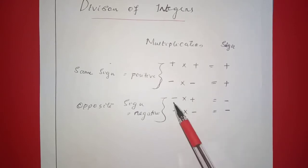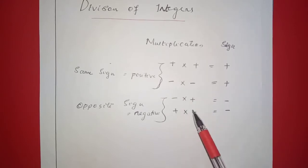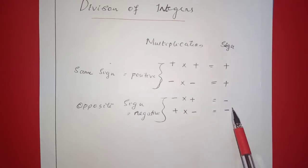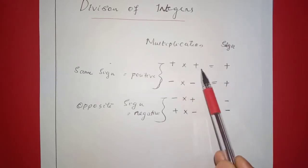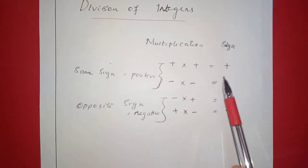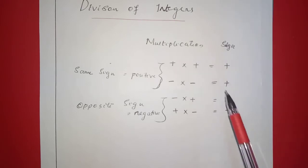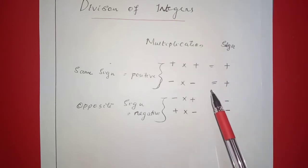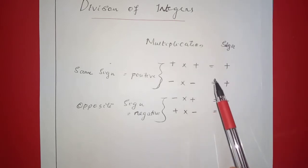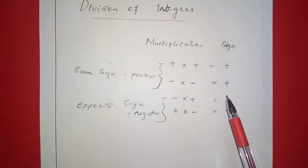In the same way, we multiply the integers. The answer is negative, and the answer is positive. In a division case, we will decide the sign.